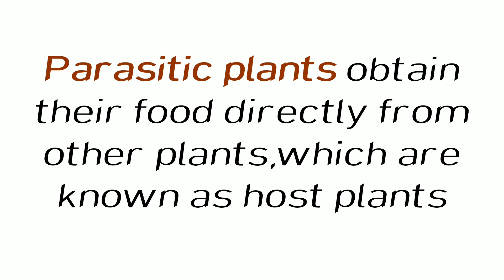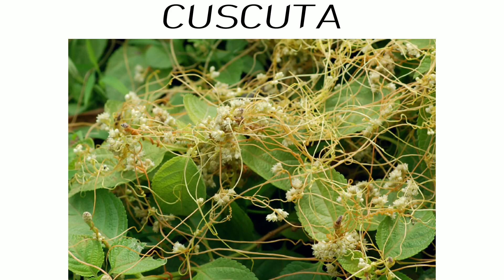Parasitic plants obtain their food directly from other plants, which are known as host plants. An example is Cuscuta. These plants obtain their food from the host plant — that is, the plant on which they grow.